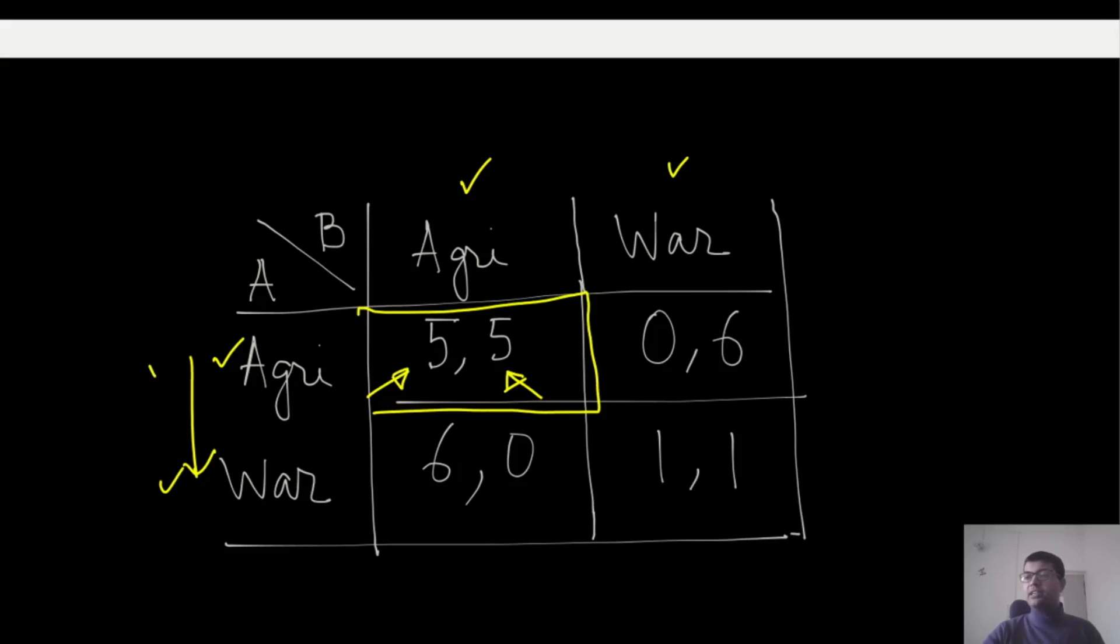Notice something about these numbers. If both of these kingdoms choose agriculture, then both of them will get some amount of payoff which is quite large—five and five. Now, when B chooses agriculture and A chooses war, A can attack kingdom B and therefore get a higher payoff of six. They will have the land and the wealth of their own, plus the agricultural produce of the other country, so they will be happier than they were before.